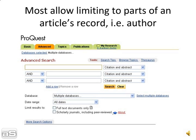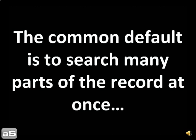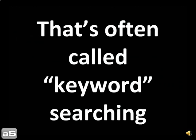Most allow limiting to parts of an article's record — for example, author. The common default is to search many parts of the record at once, which is often called keyword searching.